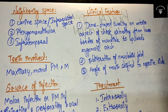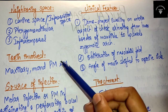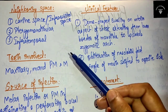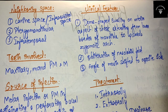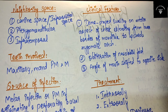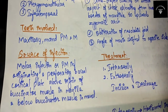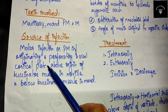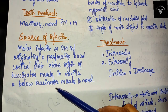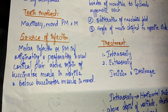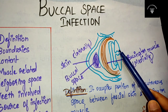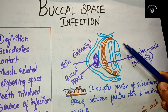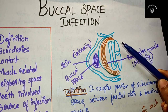The teeth involved in buccal space infection are the maxillary and mandibular premolars and molars — you can write both maxilla and mandible. The source of infection is molar or premolar infection originating and perforating the buccal cortical plate — above the origin of the buccinator muscle in the maxilla, or below the buccinator muscle in the mandible. Any infection from a premolar or molar tooth may extend past the buccinator muscle and cause buccal space infection.